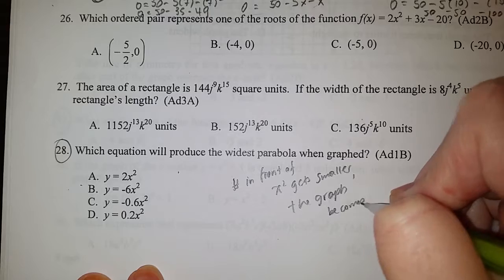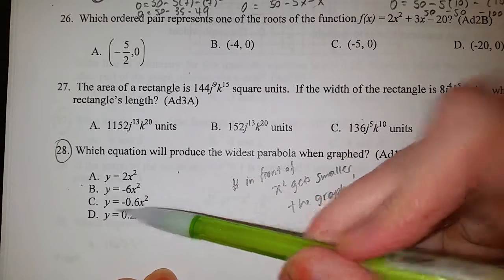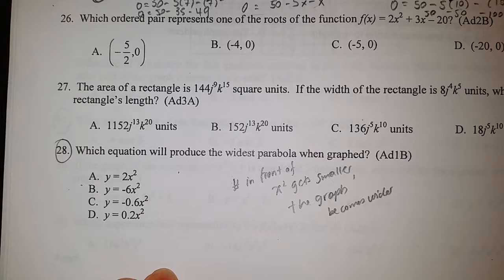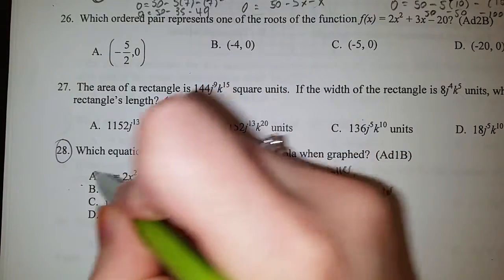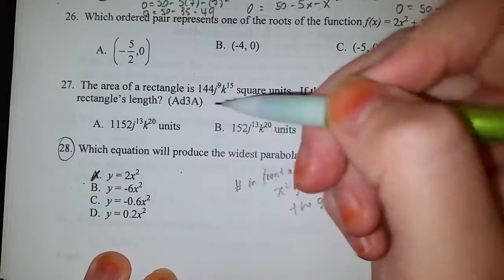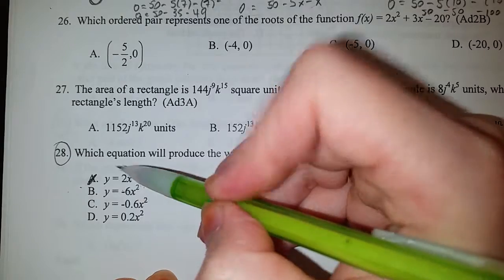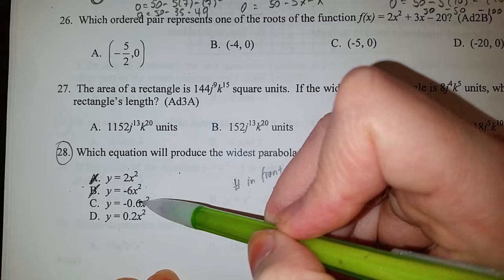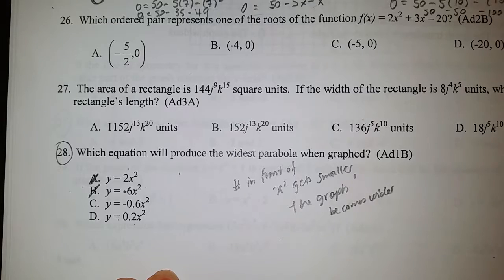Remember that we are ignoring the negative sign when comparing widest against narrowest. We have 2x² - this is a whole number, not very wide. B says -6x², ignoring the negative sign, 6 is even greater than 2, so 6 cannot be an option. It's between -0.6 and 0.2. Which is actually smaller? I would say the correct answer choice is D.